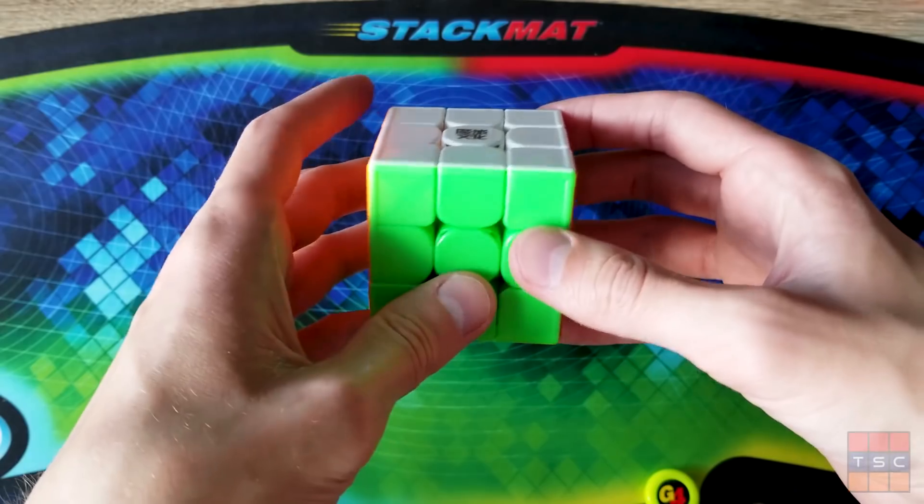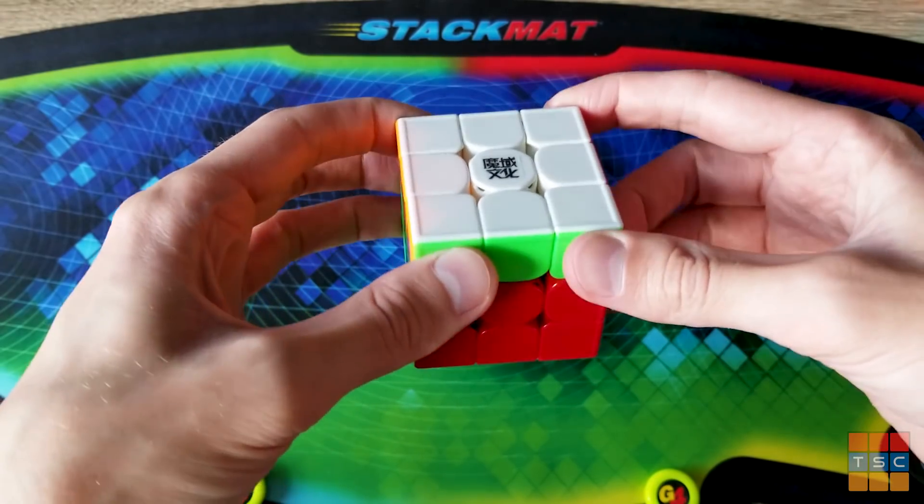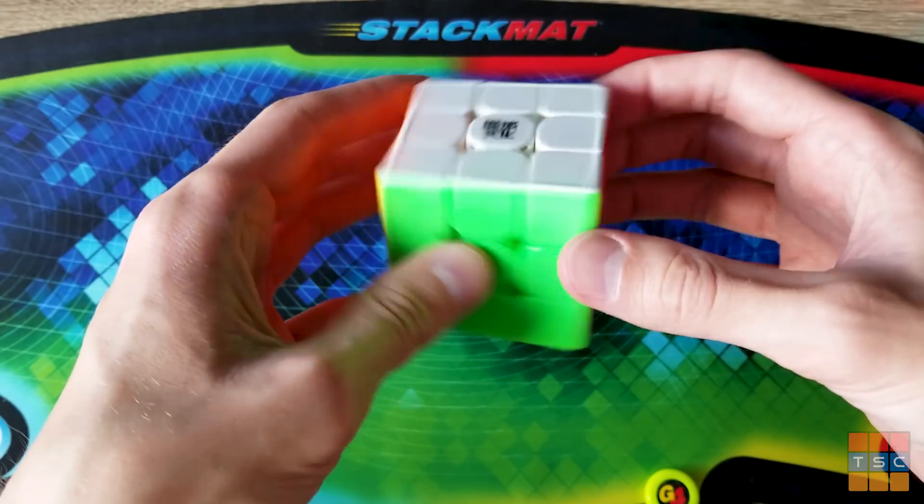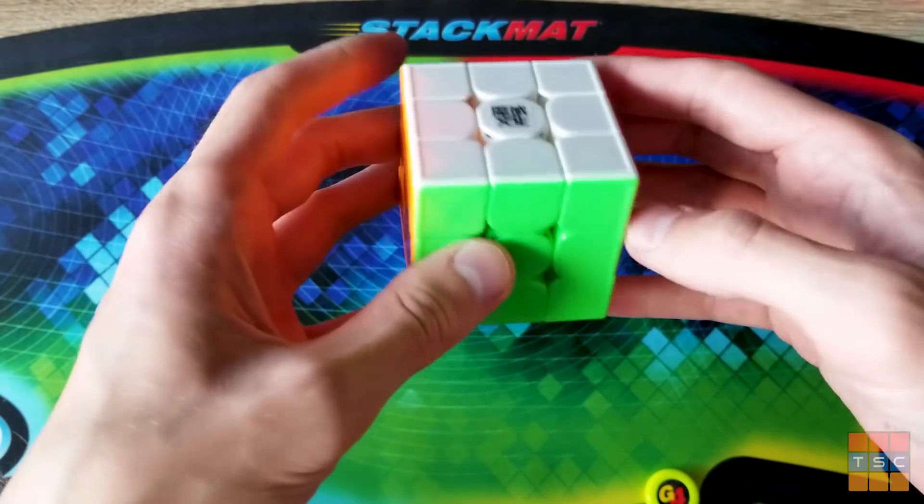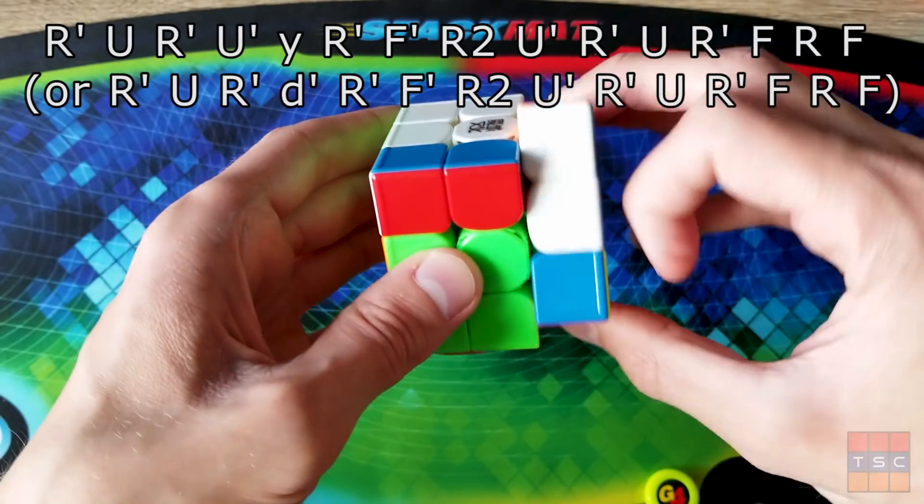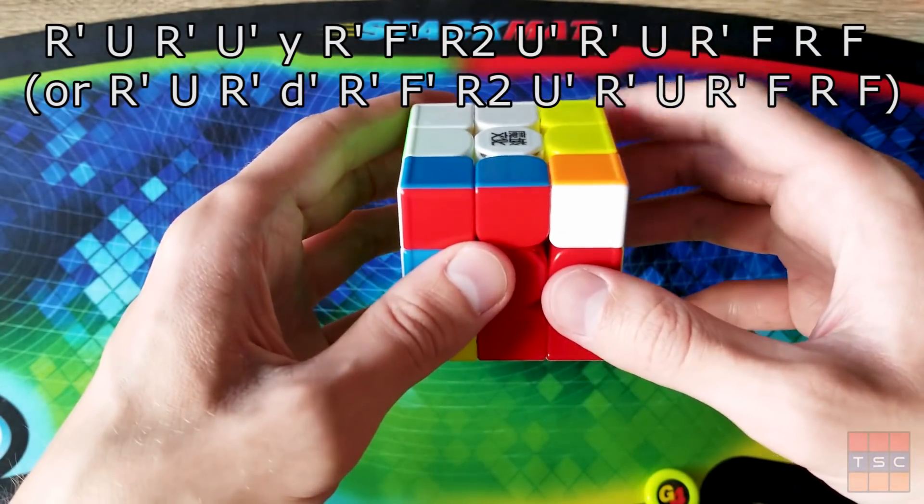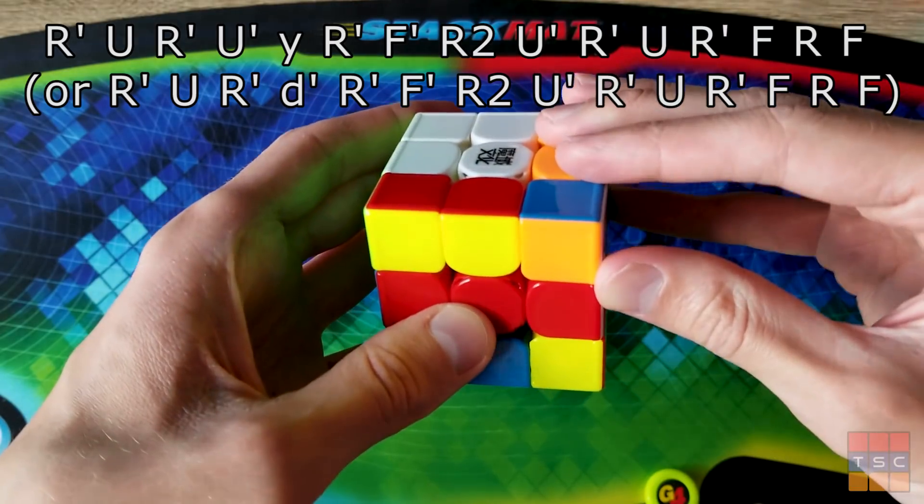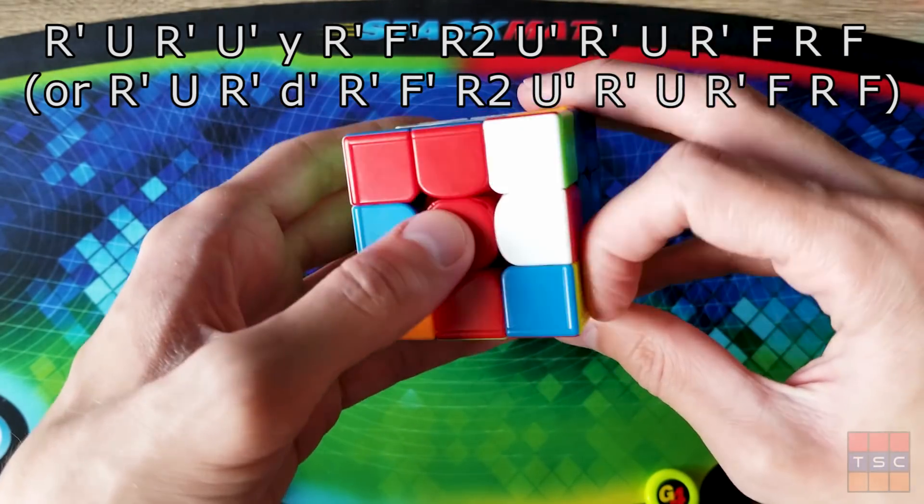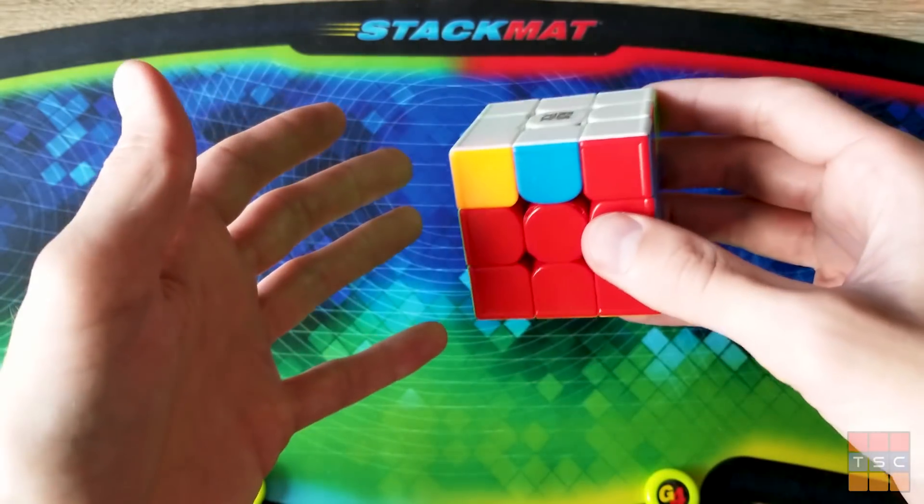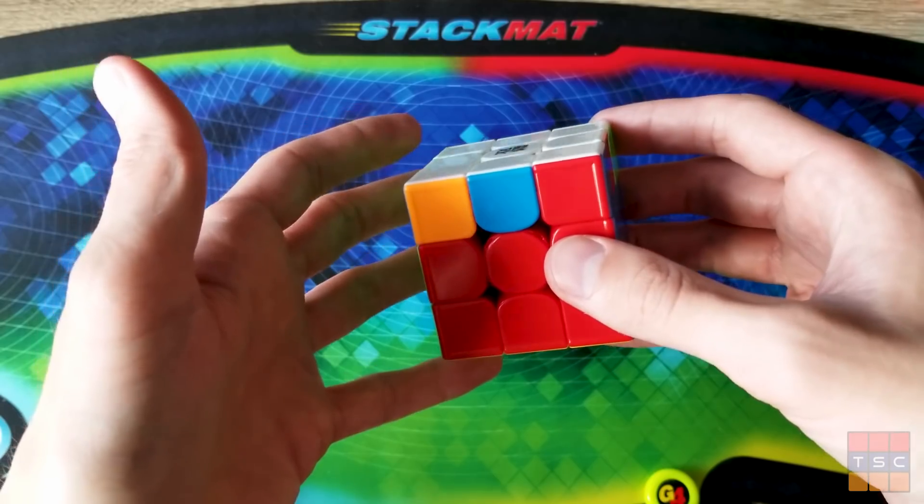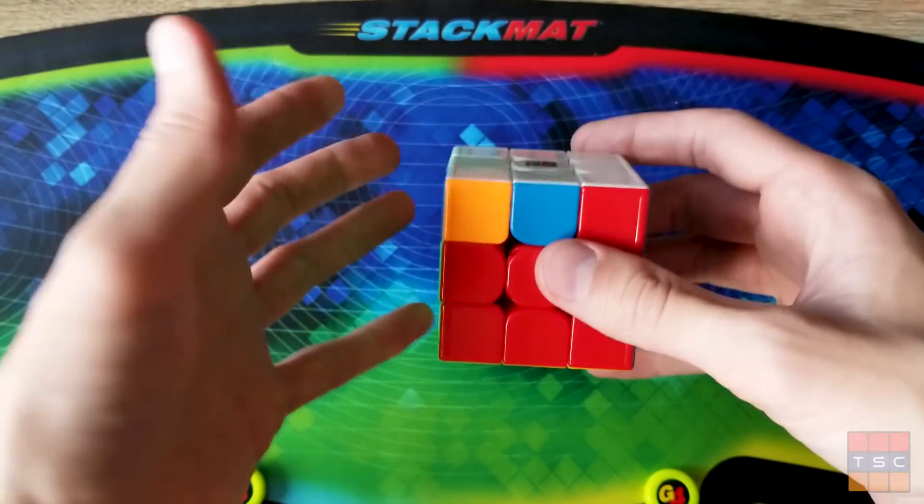So most people for V-perm use the one with a Y rotation or with a Y D move. They're both basically the same algorithm. It just depends on whether you'd rather turn or do a Y D move, and the algorithm goes R' U R' U' Y rotation R' F' R2 U' R' U R' F R F. And that's what most people use and honestly that one's totally fine. I know there are a lot of people who can execute that really fast, especially people who are better at Y D moves than I am.